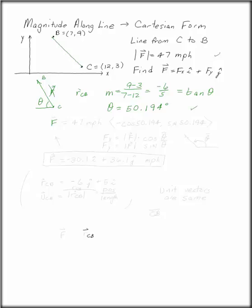Our F vector is 47 miles per hour. That is the magnitude. And now I need the vector. How do I find the vector here? This is going to be cosine of 50.194 and sine of 50.194. Now remember that F is going in the negative I direction. So we can put a negative there.